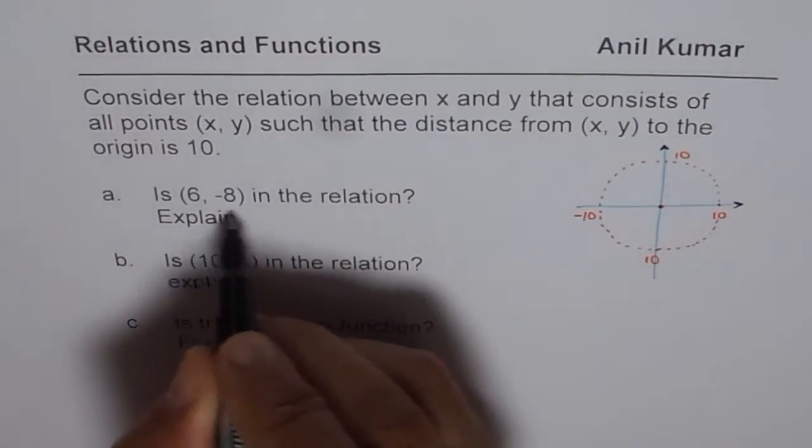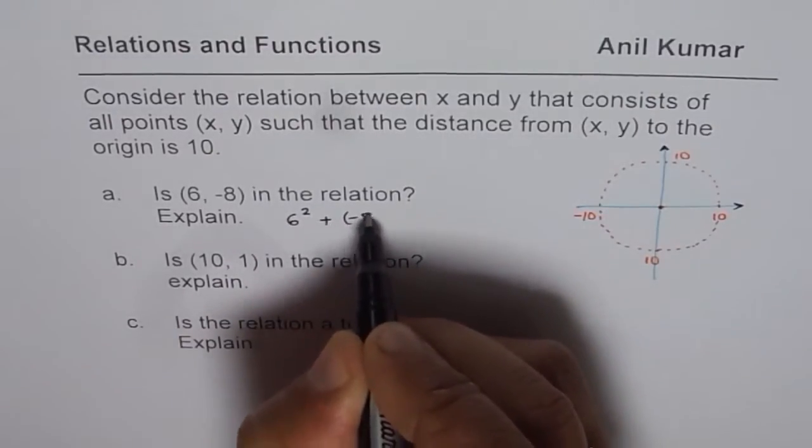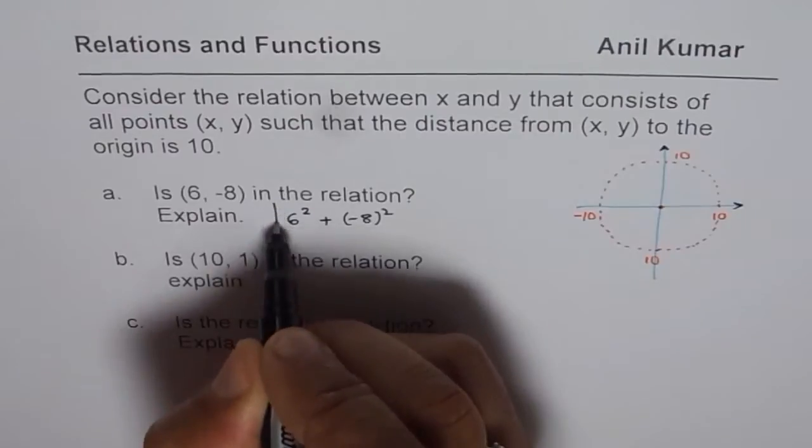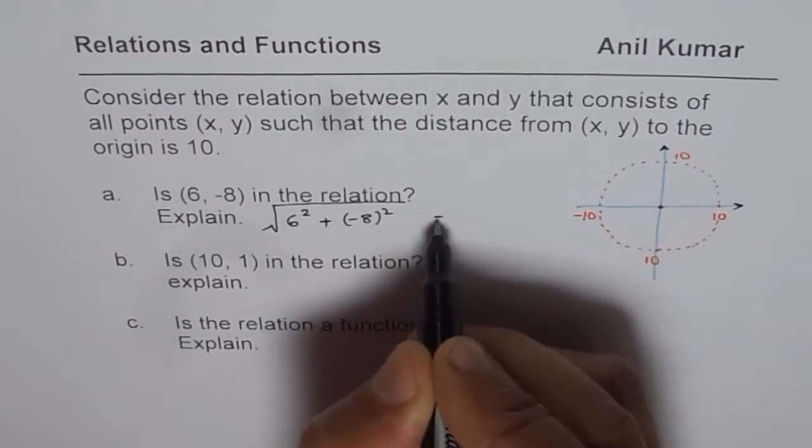The distance will be square root of 6² plus (-8)². That is the distance of a point from origin. Let's check this out.